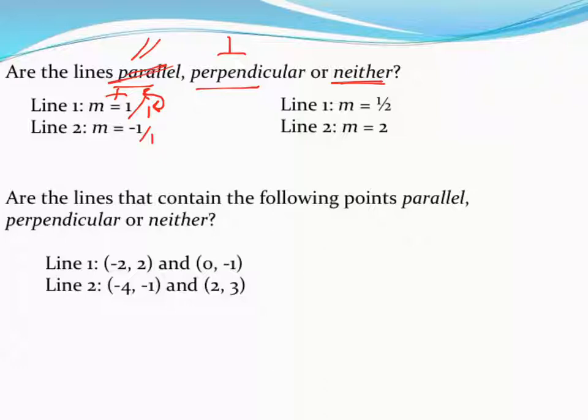So again, my definition to be perpendicular, I need to have opposite signs. I've got that. 1's positive, 1's negative. I have to have lines that are fractions that are reciprocals, and since 1's its own reciprocal, I have that, meaning these two lines must be perpendicular to each other.